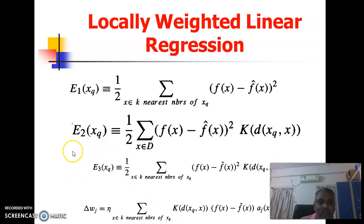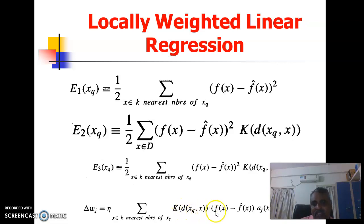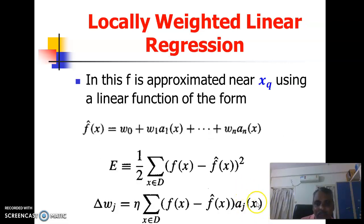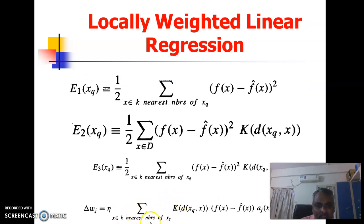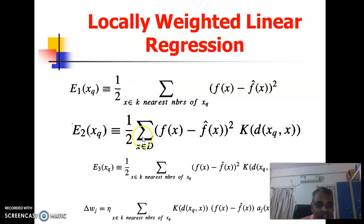Corresponding to this mean square error E3, the delta_wj = eta * sum over x in k-nearest-neighbors of x_q of K(d(x_q, x)) * [f(x) - f-cap(x)] * a_j(x). Comparing this with the earlier expression, the distance factor K is multiplied and we use only nearest training examples, not all. I hope the topics of locally weighted regression and locally weighted linear regression are clear. Thank you.